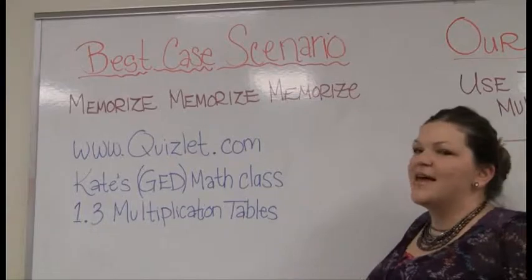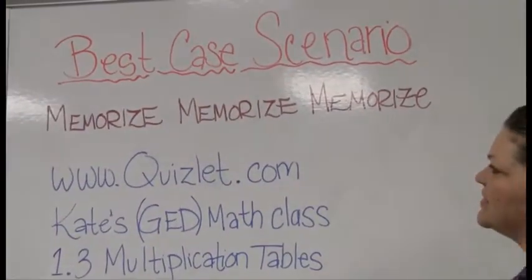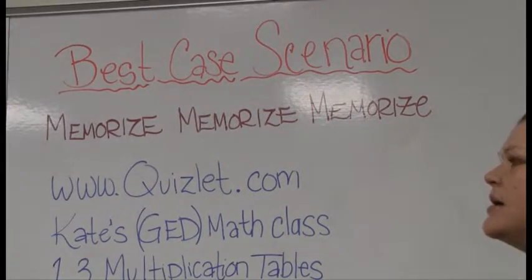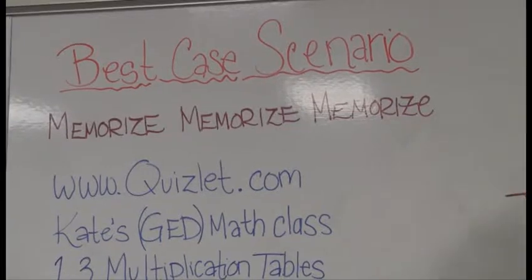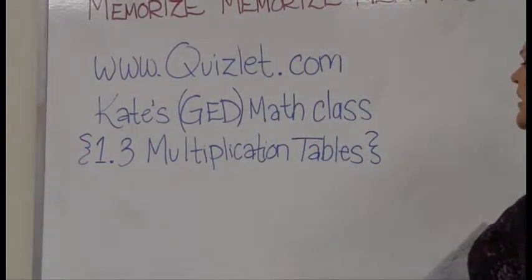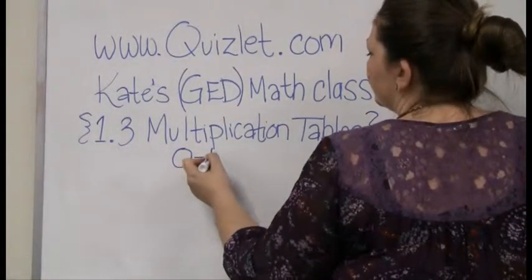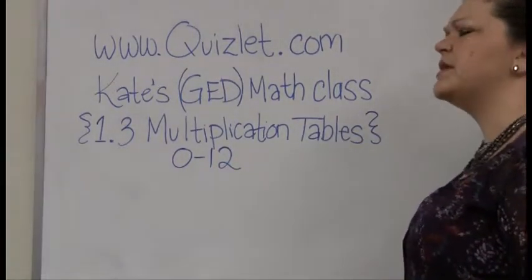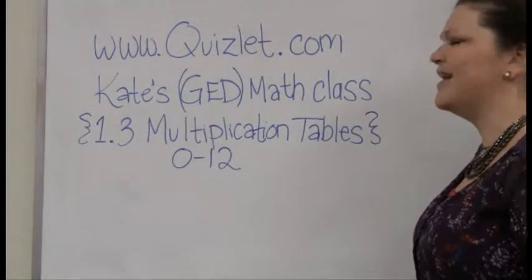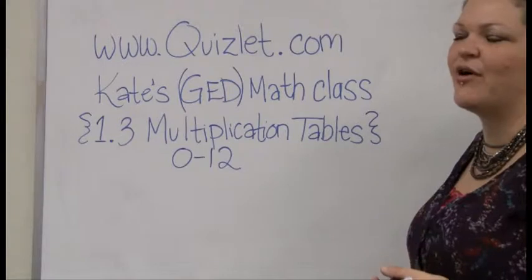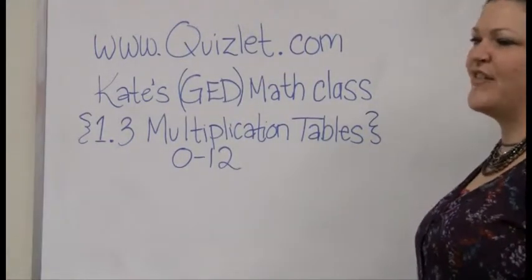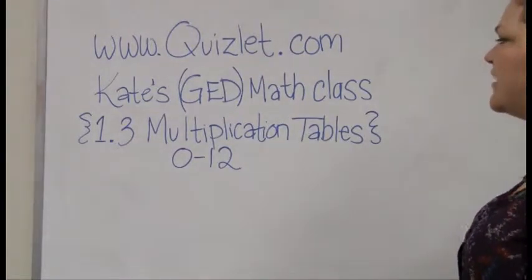Once again, let me repeat that with your multiplication facts, the best case scenario, guys, is that we've got them all memorized. So memorize, memorize, memorize. And I've got some sets set up in Quizlet that will enable you guys to do that really easily. Our ultimate goal is that you can do set 1.3 multiplication tables flawlessly. But the thing about this one is it's got all the multiplication facts from 0 to 12. If you're the type of person who mostly knows their multiplication tables and just needs maybe a refresher on a few that you always forget, like 7 times 8, this is probably where you should start.